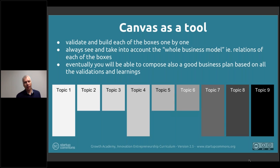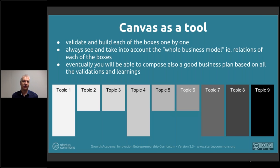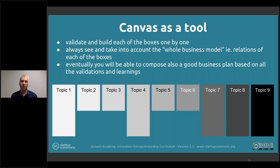Once you have enough iterations and validations done, you can start moving that content into the traditional business plan format. The business model should no longer be changing so rapidly — maybe every six months or once a quarter — and that's a good time to update and rewrite the full document as needed. You need a longer format to communicate to more people in a more understandable way.